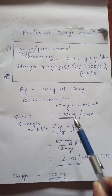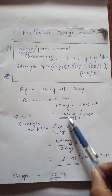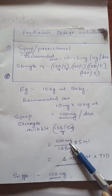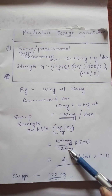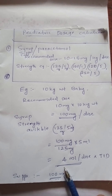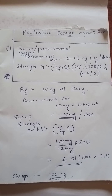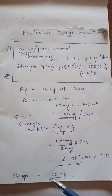To calculate the correct volume: (100 mg ÷ 125 mg) × 5 ml = 4 ml per dose. The frequency can be TID (three times a day). If using a suppository, since it is available in 100 milligram, you can directly give the 100 milligram suppository to the baby.